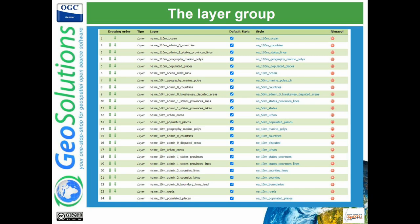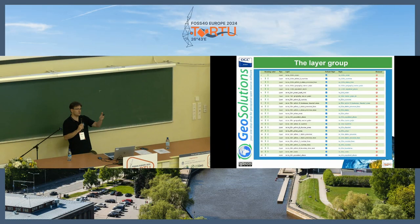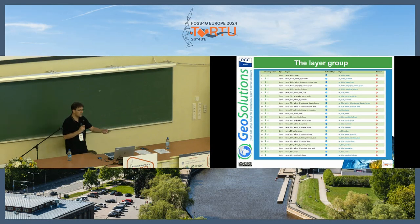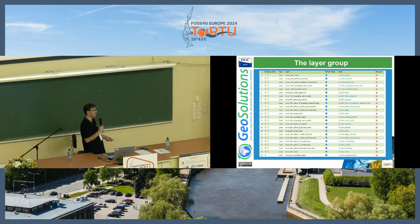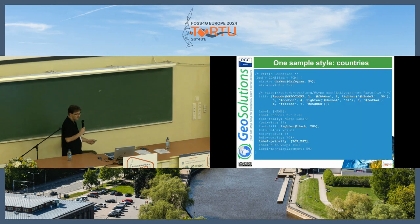A number of layers were selected from Natural Earth. The download is easy — you can just take the Natural Earth quick start package, stick it into GeoServer as a directory in a well-known position, and there you go. You have GeoServer running and serving this base map.